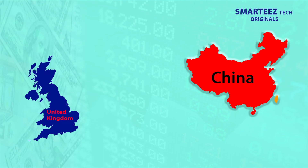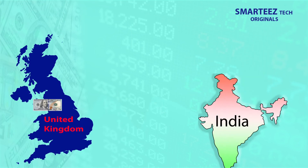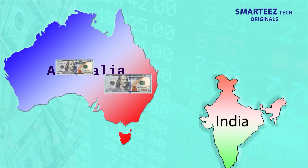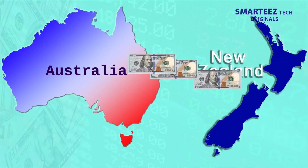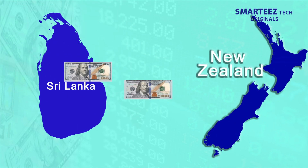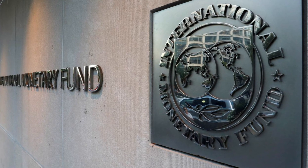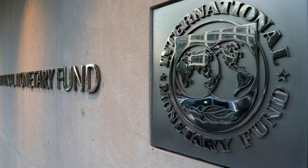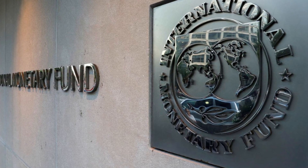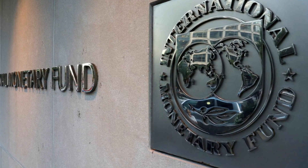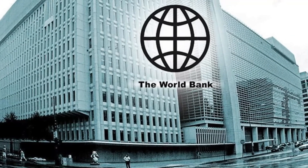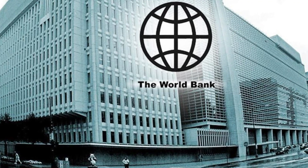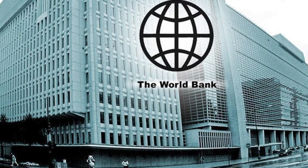Today, almost all international trade happens using the US dollar, and nations keep a large amount of their foreign reserves in US dollars, keeping the currency in high demand. The Bretton Woods Conference also introduced two important international financial institutions: the International Monetary Fund, or IMF, and the International Bank for Reconstruction and Development, or IBRD, which was later renamed the World Bank.